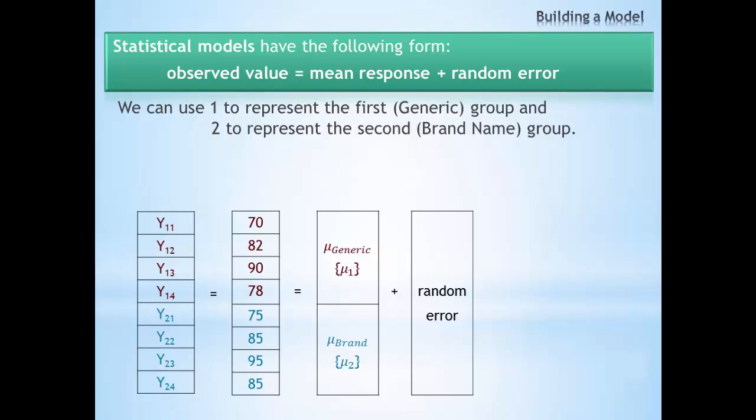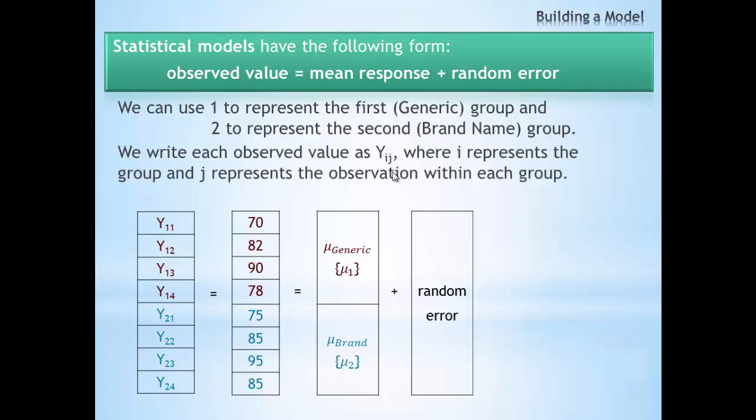We can now use symbols to represent every specific response value. The first subscript in the observed response represents which group it comes from. The second subscript represents the observation from within each group. So you notice in this case, we have four observations in the first group and four observations in the second group.